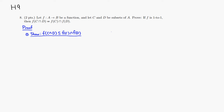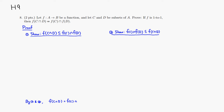Second, we have to do the other containment: show that F of C intersect F of D is contained in F of C intersect D. At the end, by steps 1 and 2, they establish mutual containment, so we know the two sets are equal — F of C intersect D equals F of C intersect F of D.